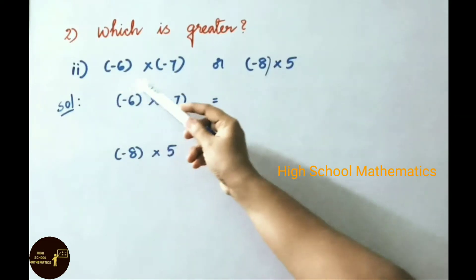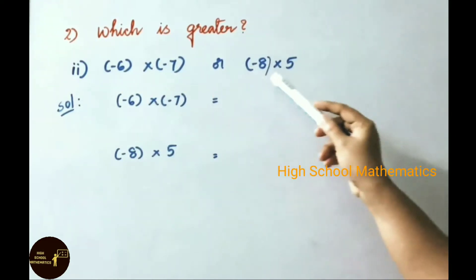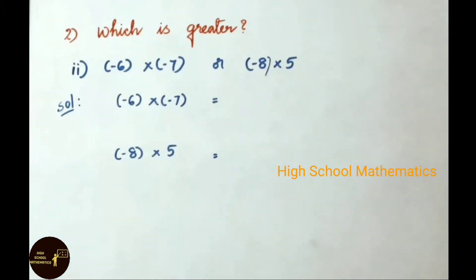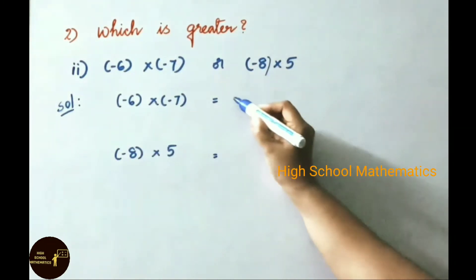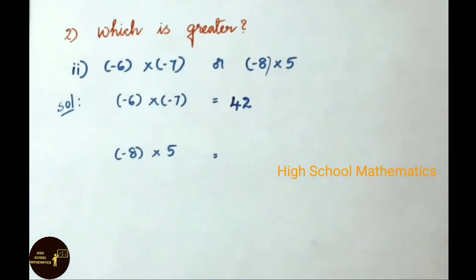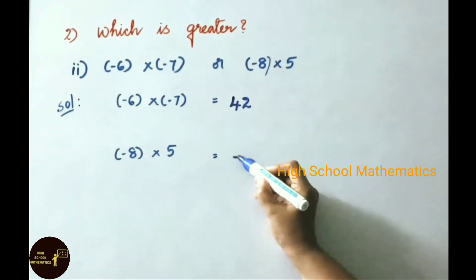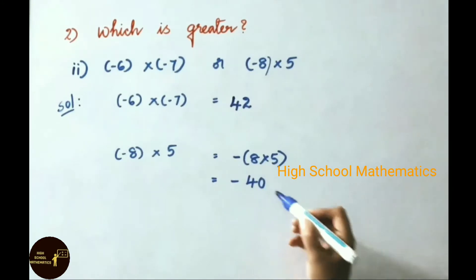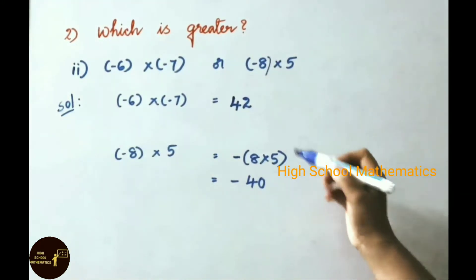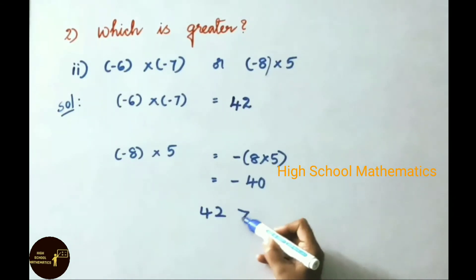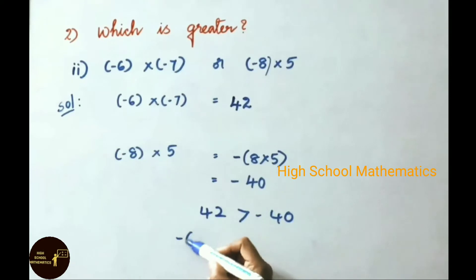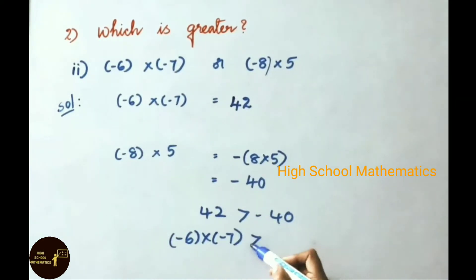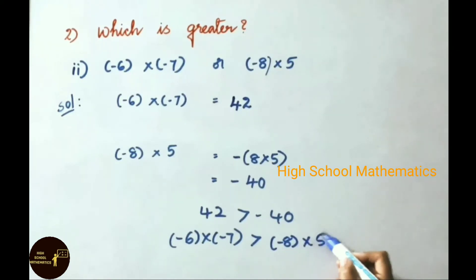Second sum: minus 6 into minus 7, or minus 8 into 5, which is greater? Minus 6 into minus 7 — whenever we multiply two negative integers, the answer is a positive integer. So minus into minus gives plus, 6 sevens are 42. For minus 8 into 5, that equals minus of 8 into 5, that equals minus 40. 42 is greater than minus 40. Therefore, minus 6 into minus 7 is greater.